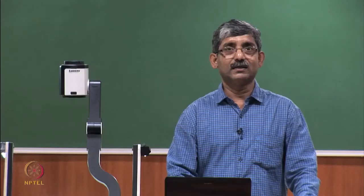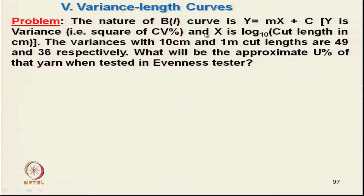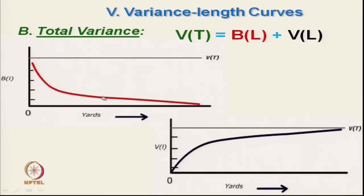Now we will see one practical numerical. The nature of the BL curve is given as a logarithmic curve: Y equals MX plus C, where Y is the variance (square of CV%) and X is the log of cut length. If we plot Y on a log axis, the curve becomes a straight line. Many manufacturers have programmed it in logarithmic form, so the BL curve is normally in log form.